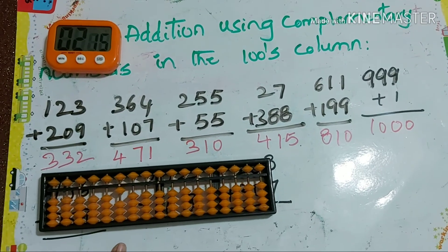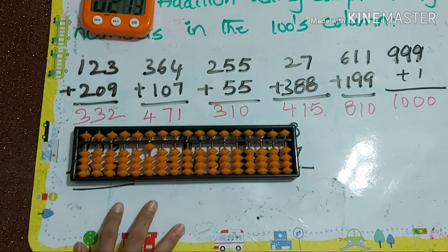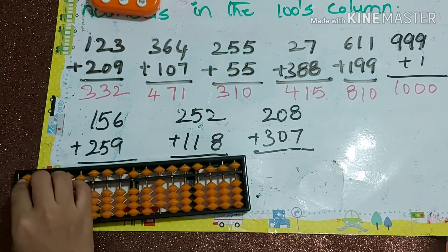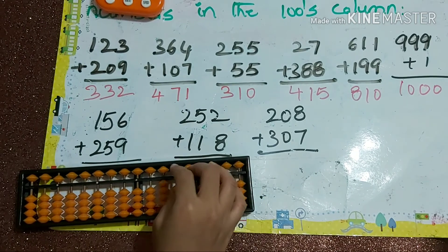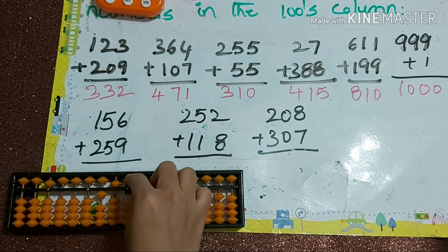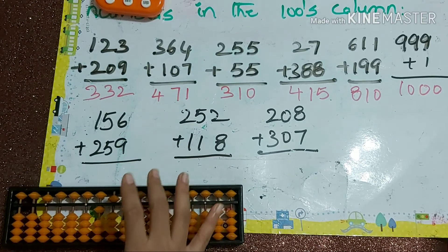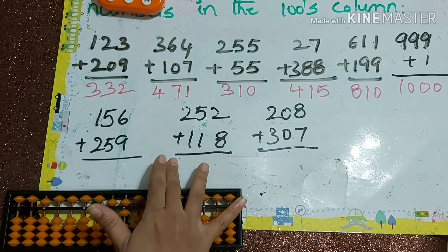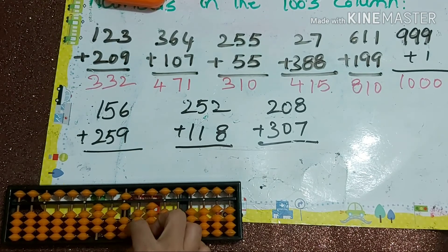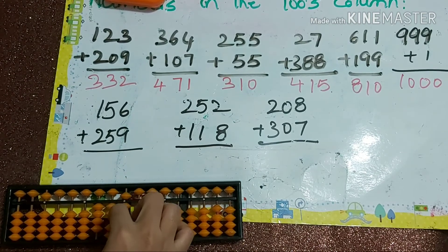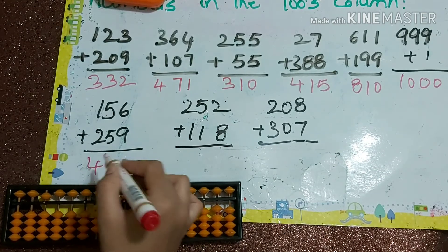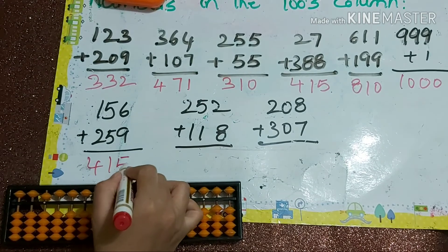It's very easy but may be difficult the first time. Next: 156 plus 259 — plus 10 minus 1 — so the answer is 415.